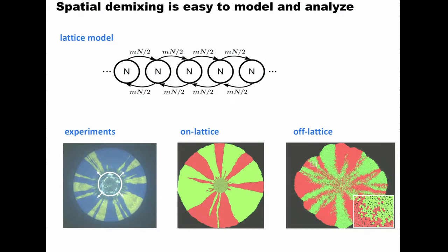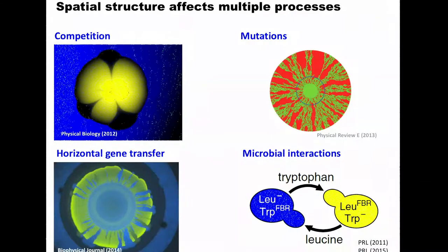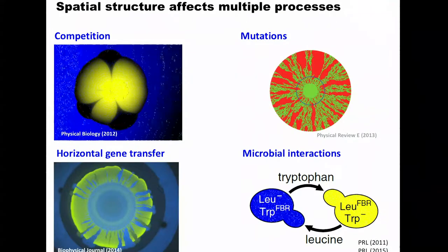In addition to simulating these patterns, one can solve them entirely analytically - computing almost every property one wants about these expansions. For example, one can calculate how the number of sectoring domains depends on migration rate, velocity of the expansion, or size of the colony, with predictions in quantitative agreement with experiments and simulations. These patterns affect many processes in microbial populations because almost all evolution and ecological processes are confined to the boundaries between different strains.